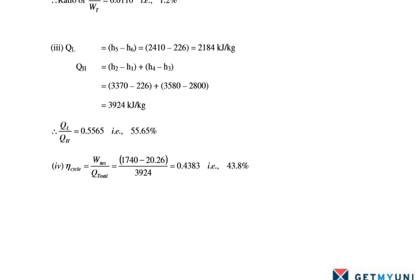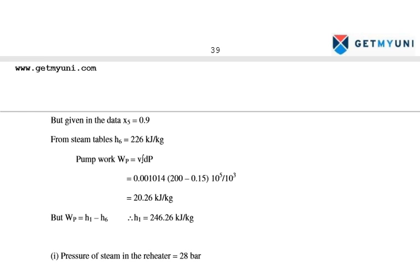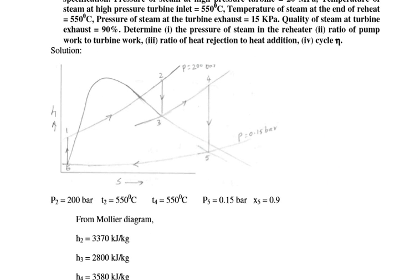Finally, the cycle efficiency = W_net divided by QH = (1740 minus 20.26) divided by 3924 = 0.4383, which is 43.8%. This numerical is different from the previous one because it uses a combination of the Mollier chart and steam table together to find values.